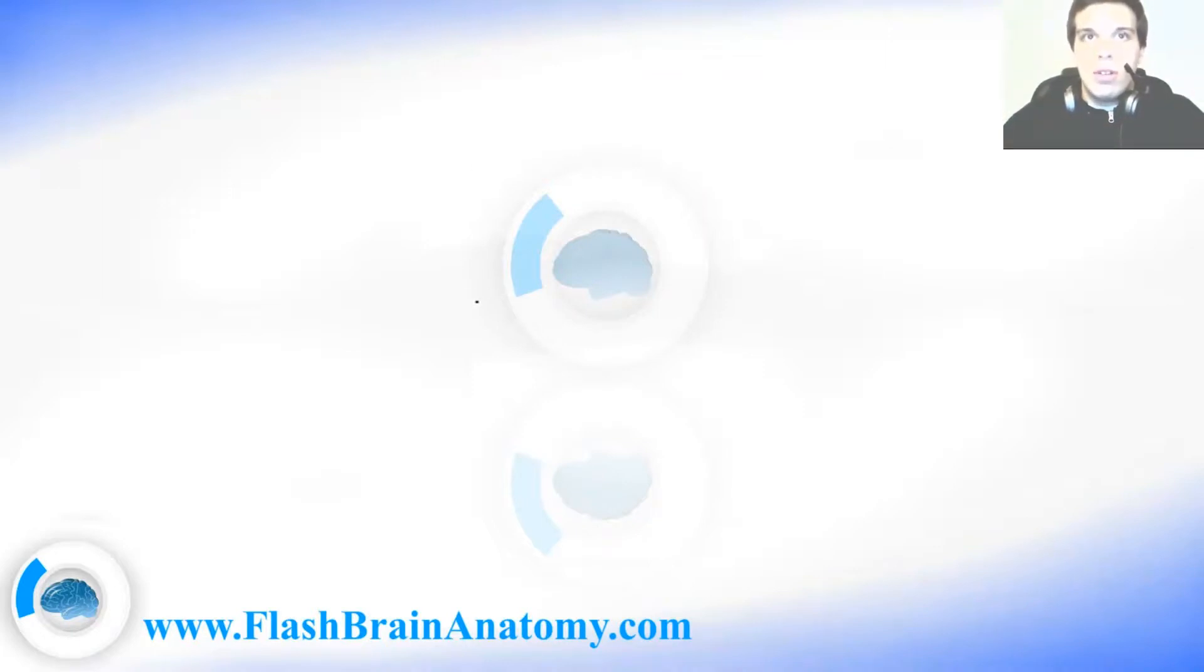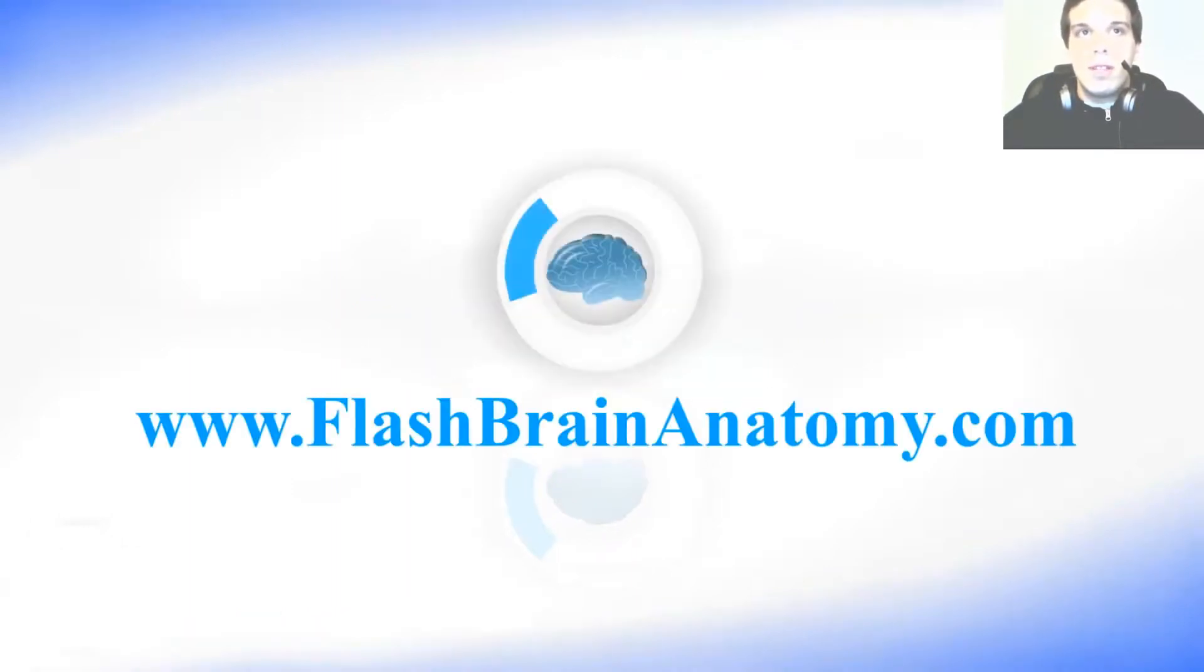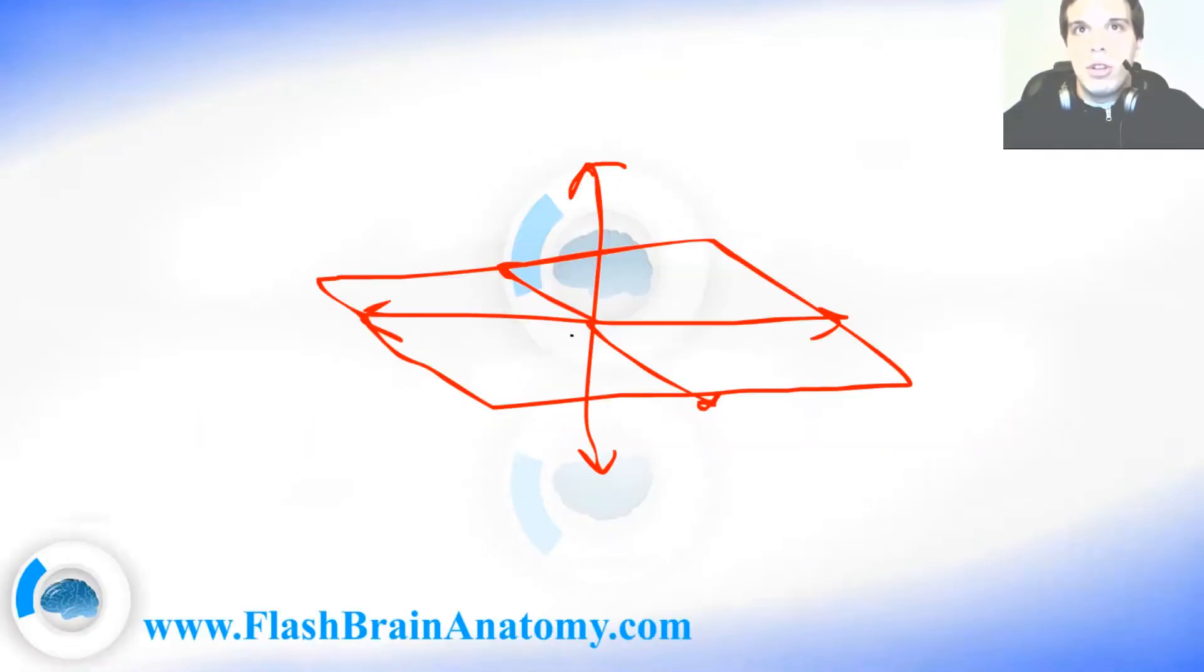First of all, it's important to note that there are three axes: the vertical axis, the horizontal axis, and the sagittal axis. Now we have the same number of planes. We have the horizontal plane. If we cut the man along the horizontal plane, the man will be cut in one upper and one lower part.